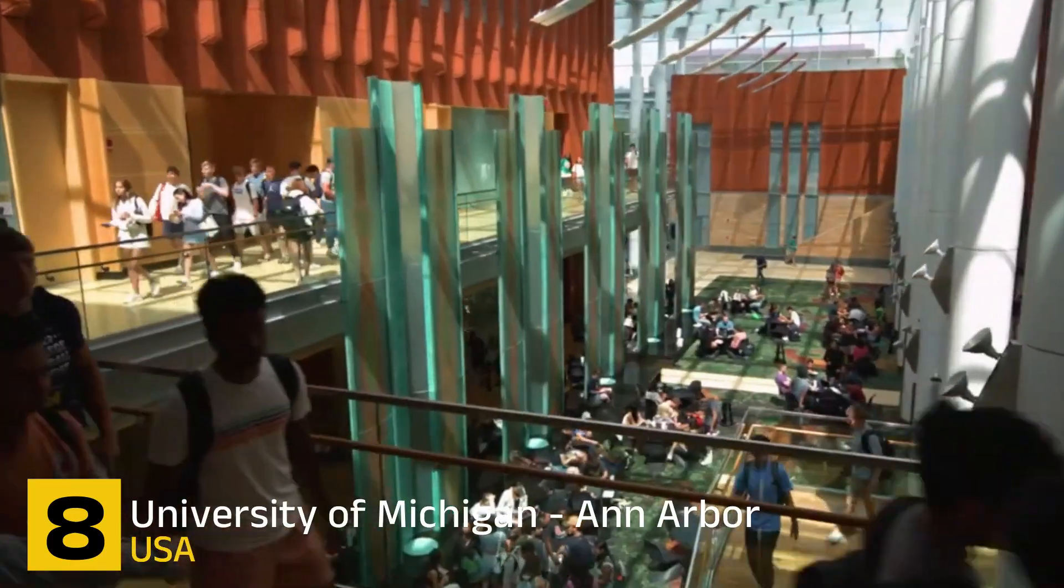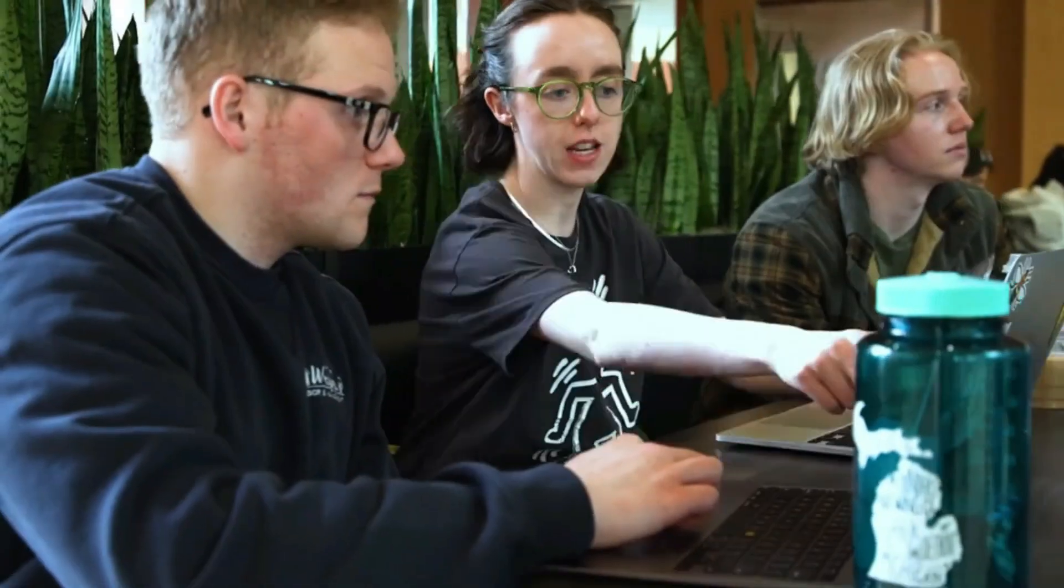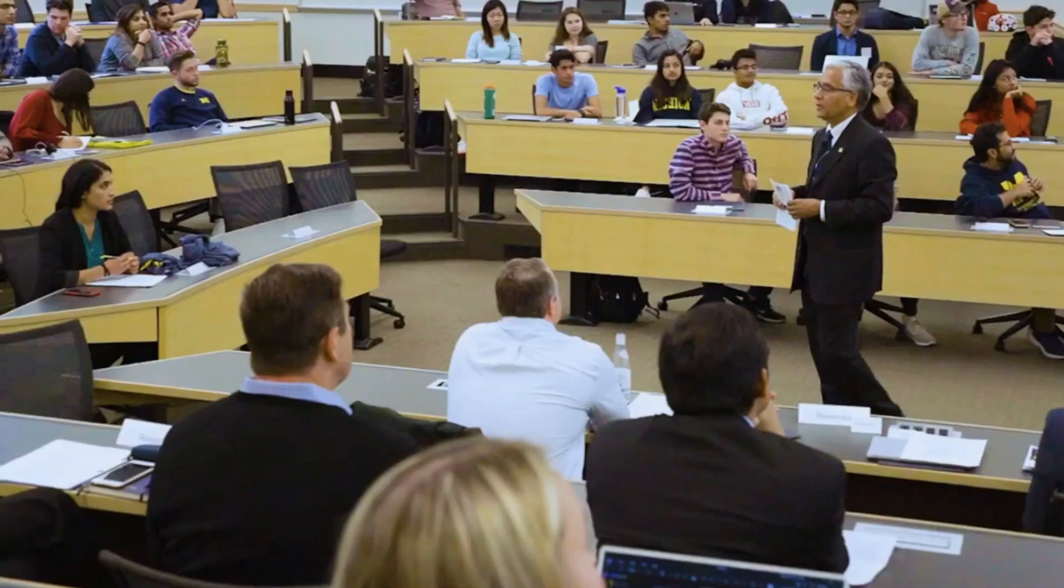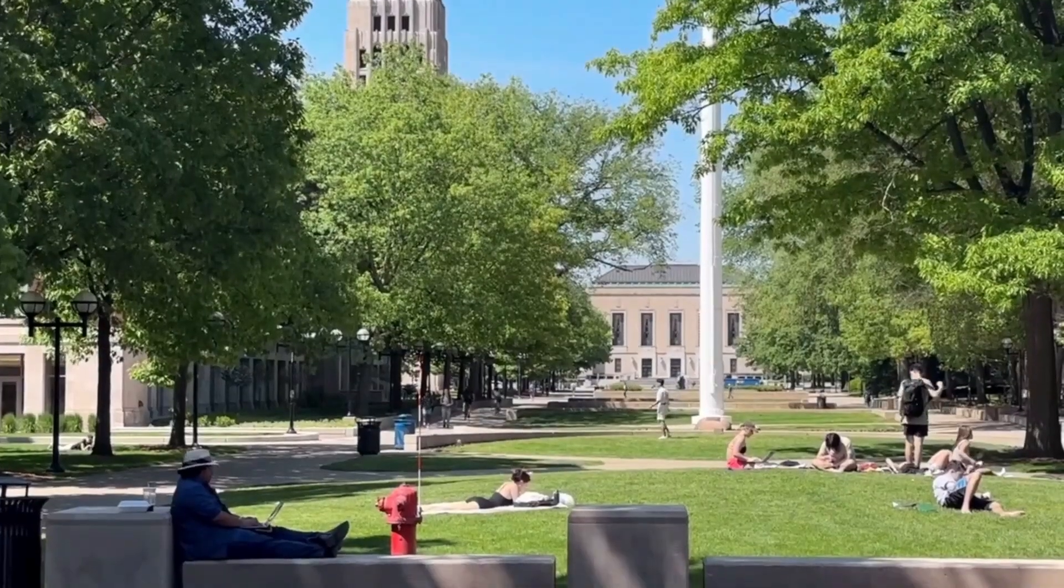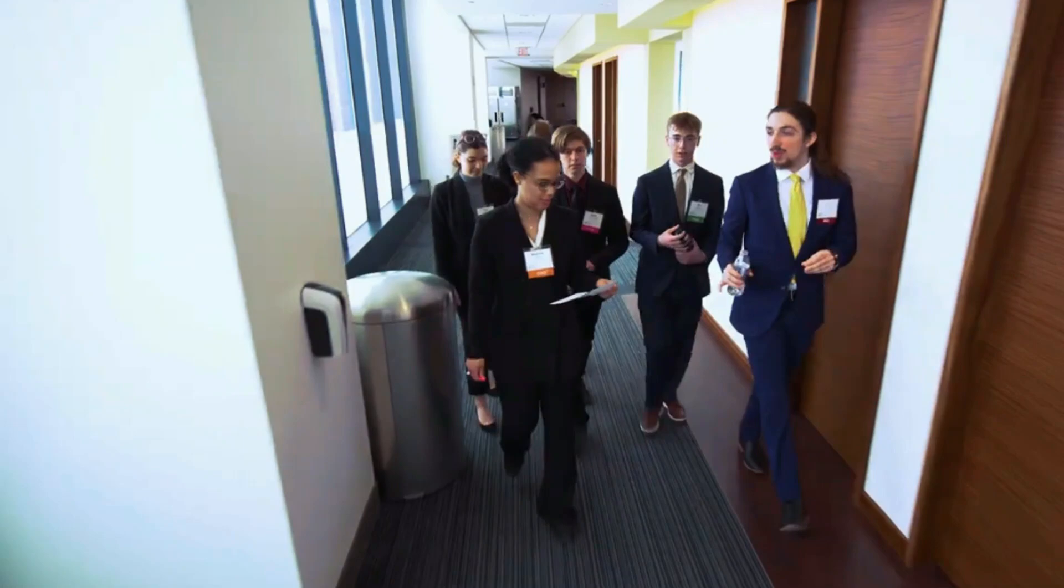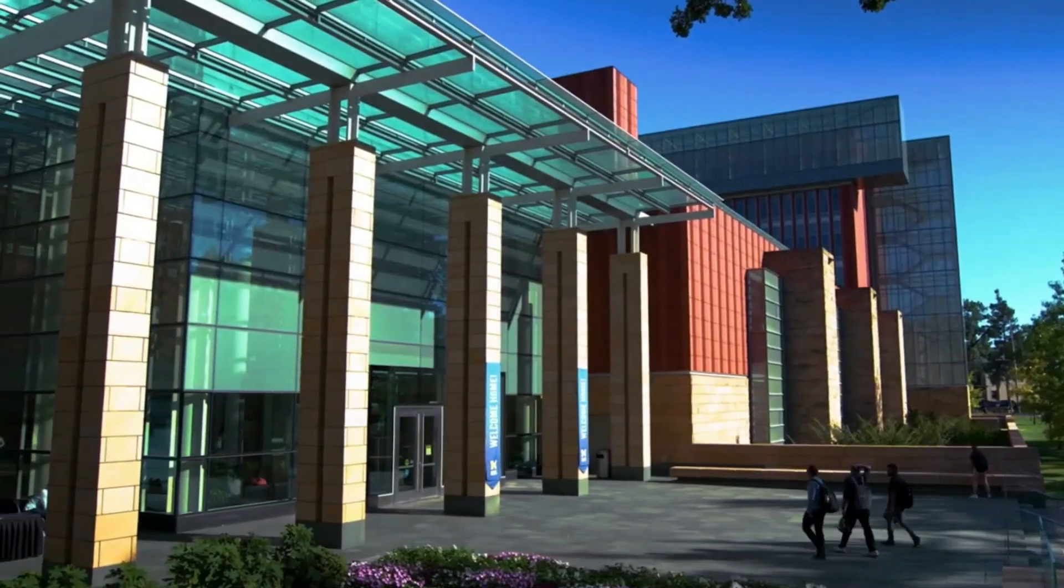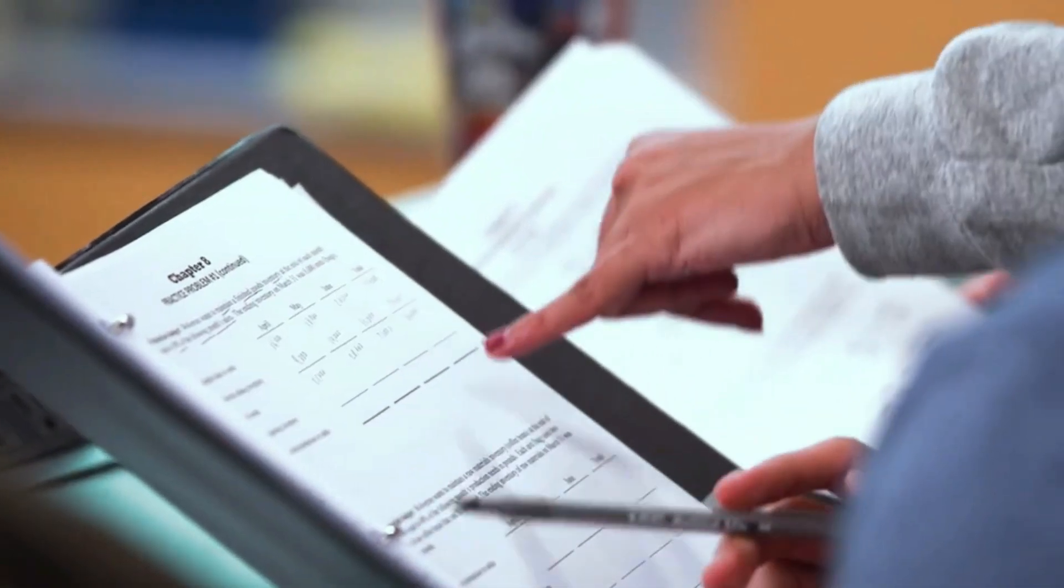Number 8. University of Michigan, Ann Arbor. The University of Michigan, situated in Ann Arbor, Michigan, is a globally recognized institution renowned for its academic excellence and comprehensive programs. Among its esteemed offerings is a robust civil engineering program that stands out for its strong emphasis on research. This focus on research provides students with unparalleled opportunities to engage in cutting-edge projects, collaborate with distinguished faculty members, and contribute to advancements in the field.